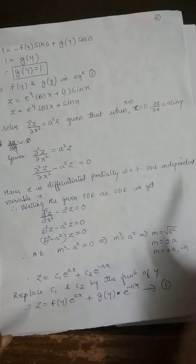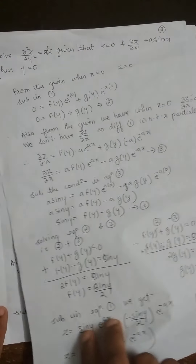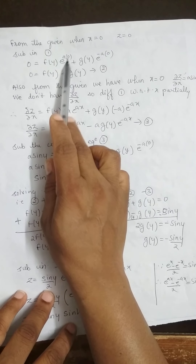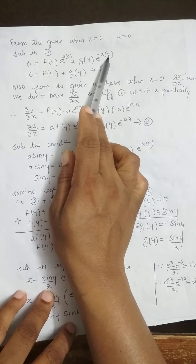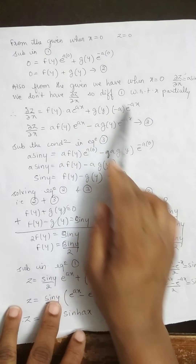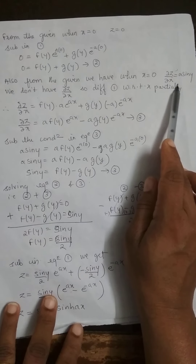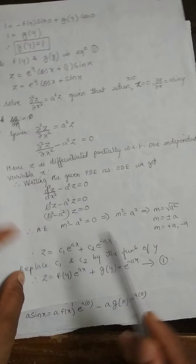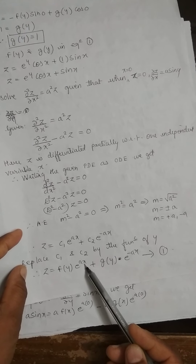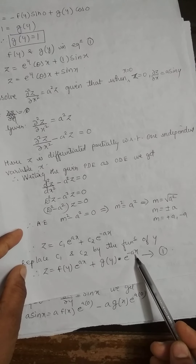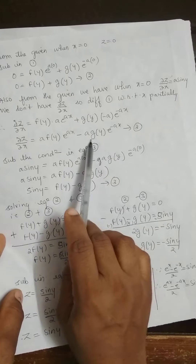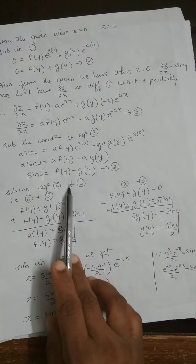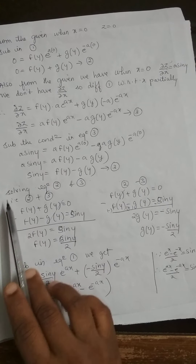Substituting the first condition — when x = 0, z = 0: e^(a·0) = 1 and e^(−a·0) = 1, giving f(y) + g(y) = 0. For the second condition, since we don't have ∂z/∂x, differentiate equation 1 with respect to x: ∂z/∂x = f(y)·a·eᵃˣ + g(y)·(−a)·e⁻ᵃˣ — equation 2.